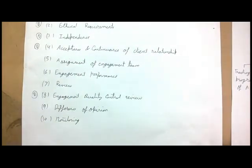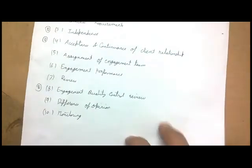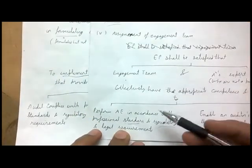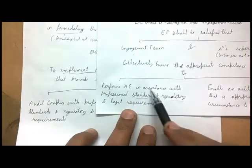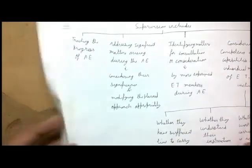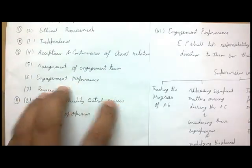This enables the auditor to ensure that professional standards and laws and regulations have been followed, and that the audit report is appropriate in the circumstances. Now we move to engagement performance. The objective is that the audit complies with professional standards and regulatory and legal requirements, and that an appropriate audit report can be issued.